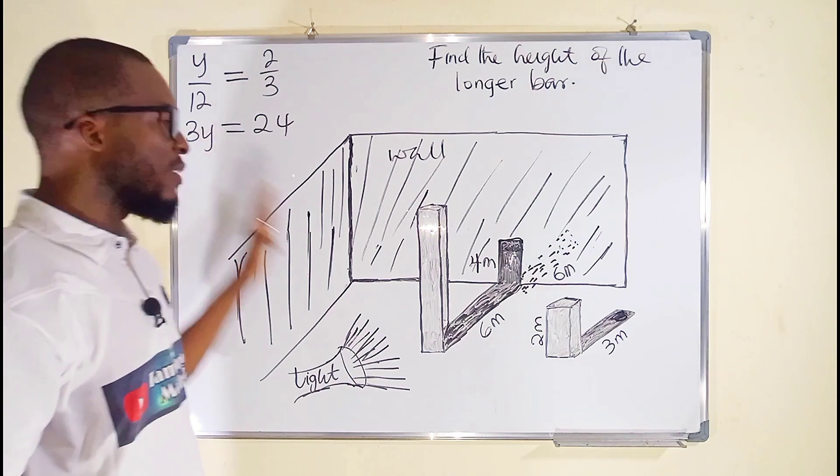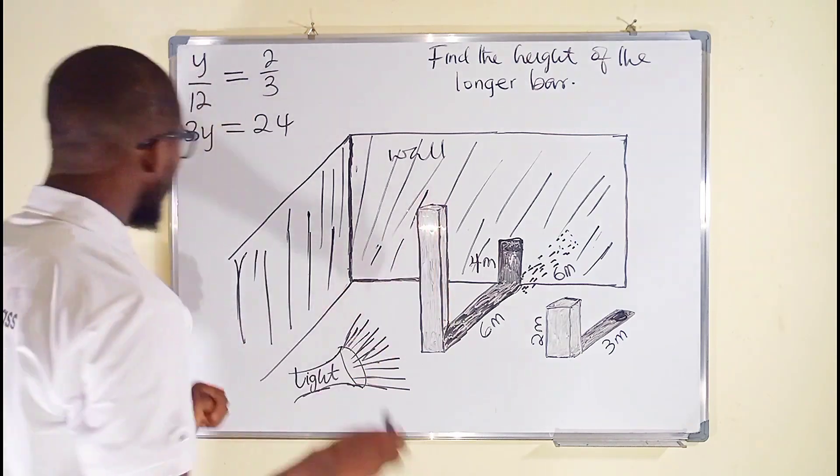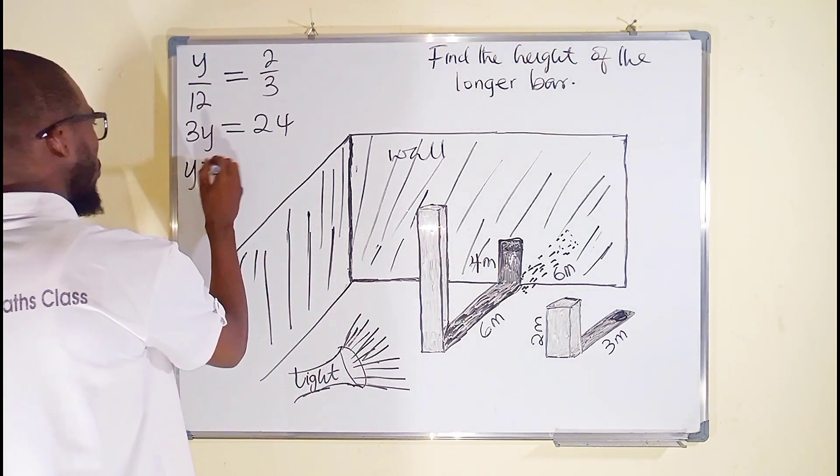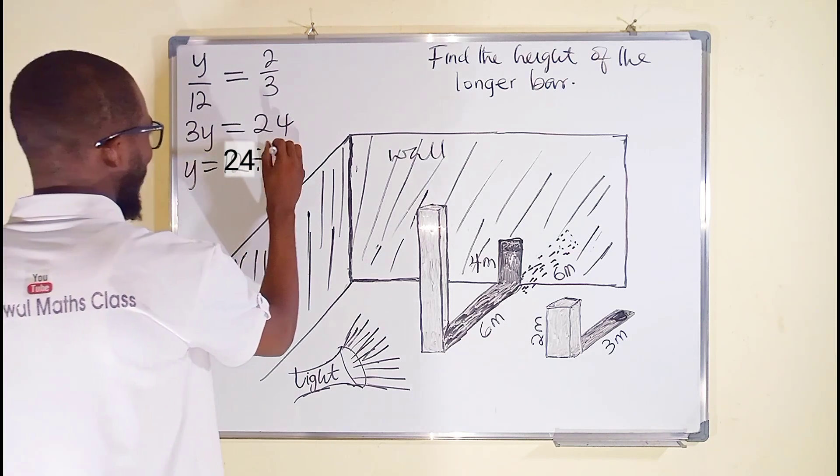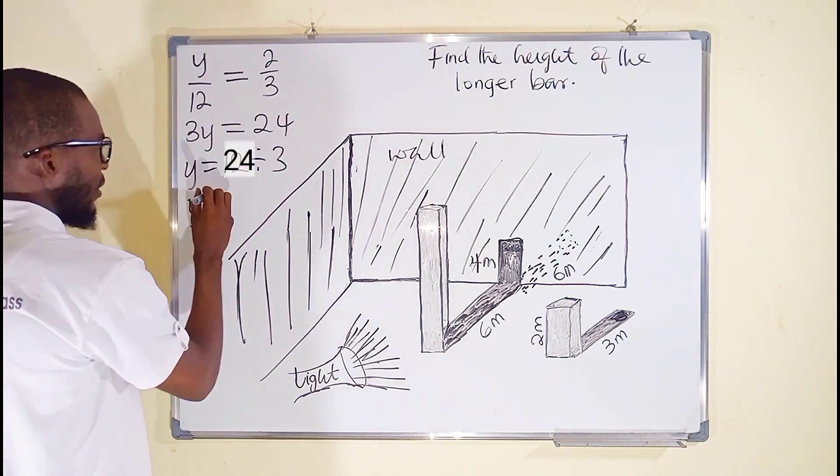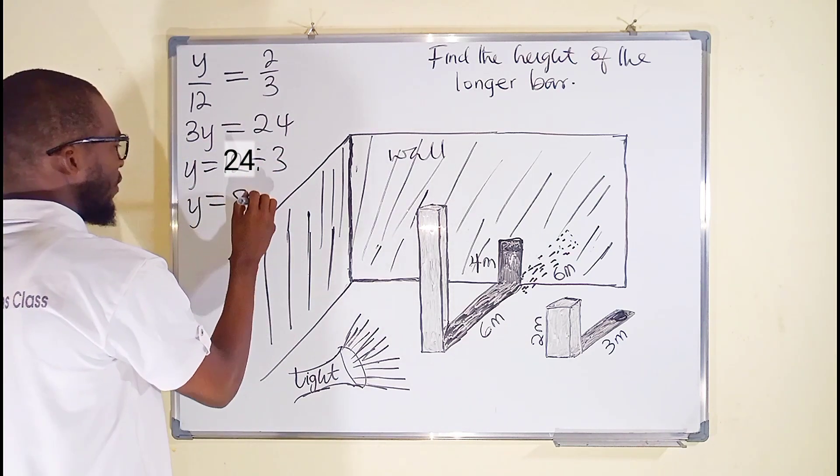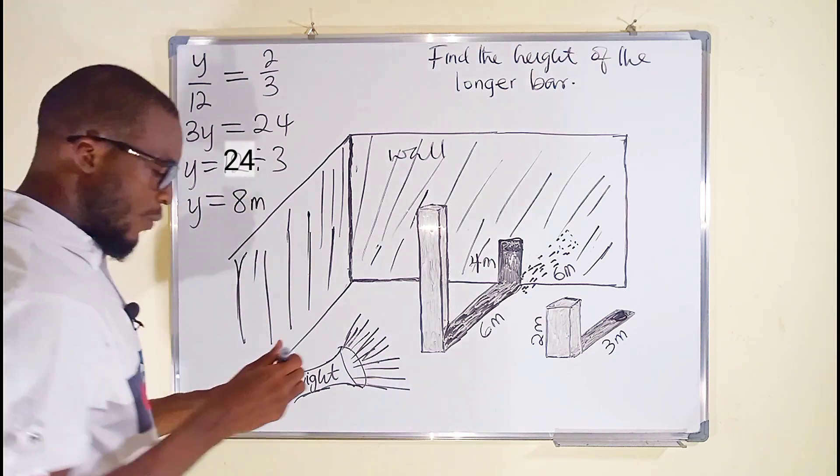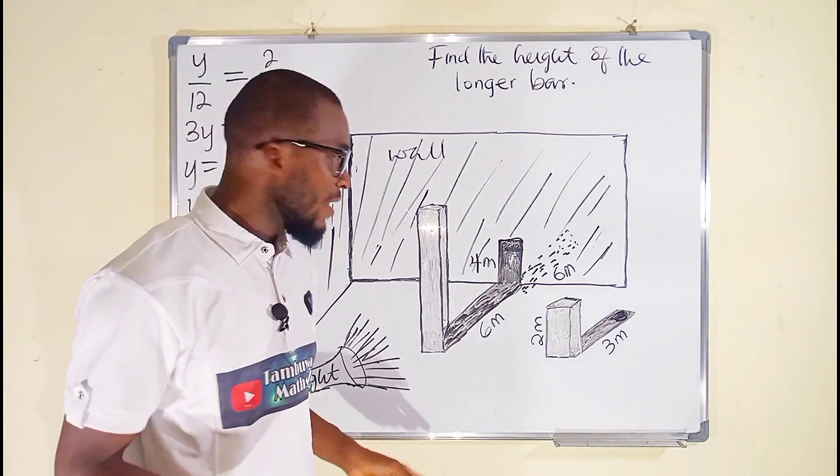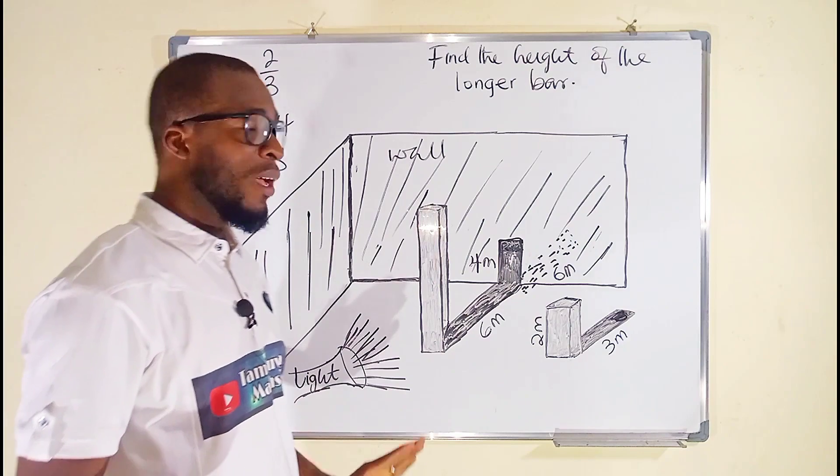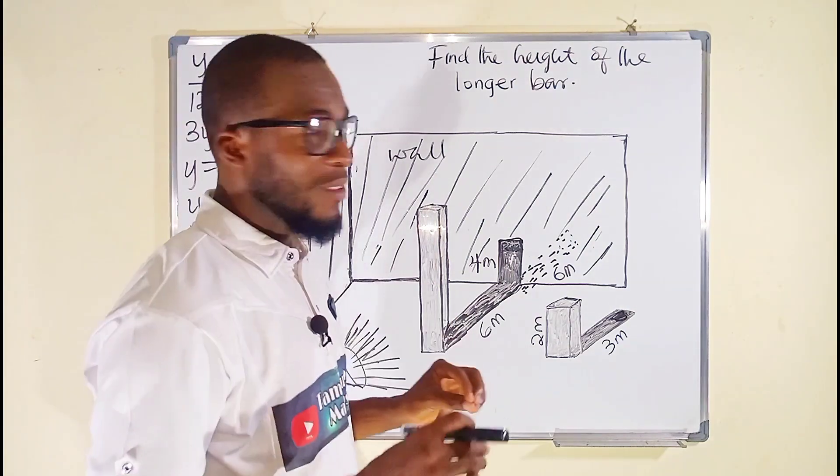We are looking for y and y is said to be the height of the longer bar. y will be equal to 24 divided by 3. And finally, y is equal to 8. And this 8 is a meter. What does this mean? It means that the height of this longer bar is equal to 8 meters.